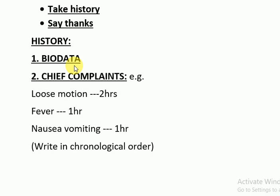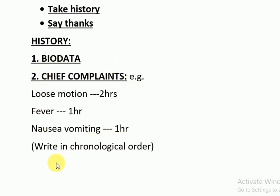Number two is the chief complaints. You would ask the parents what were the complaints that compelled them to come to the hospital. For example, if the parents tell you that the child is having loose motion for the last two hours, fever for the last one hour, along with nausea and vomiting for the last one hour — then these are the chief complaints. Always write the complaints in chronological order.